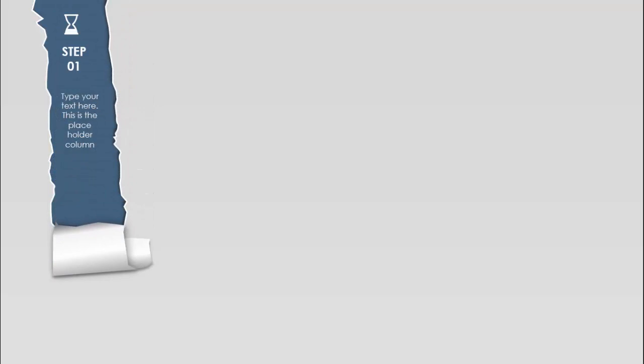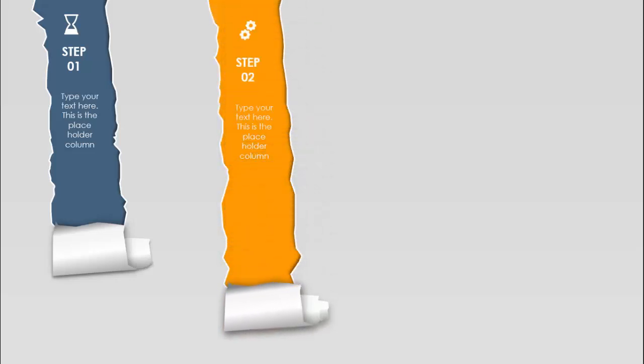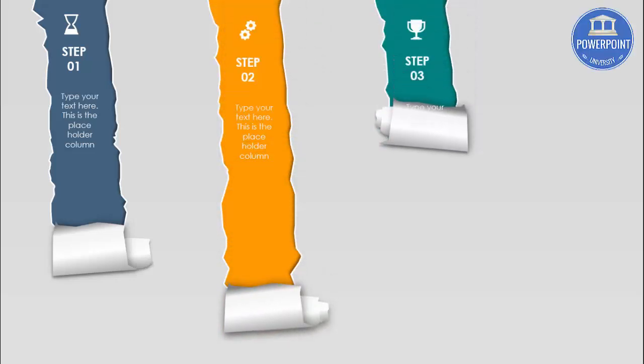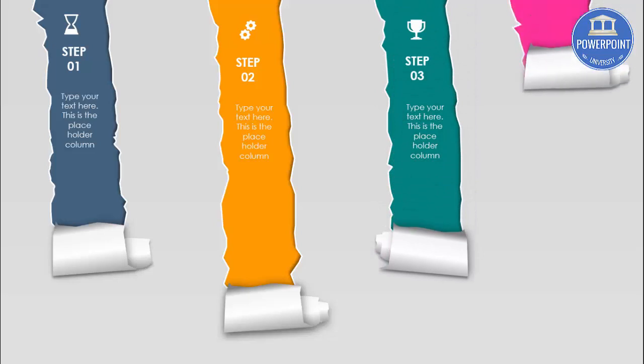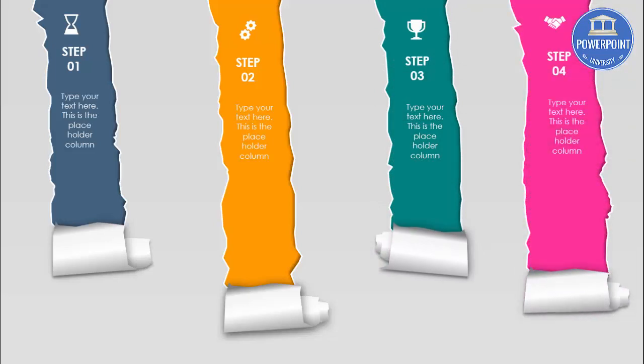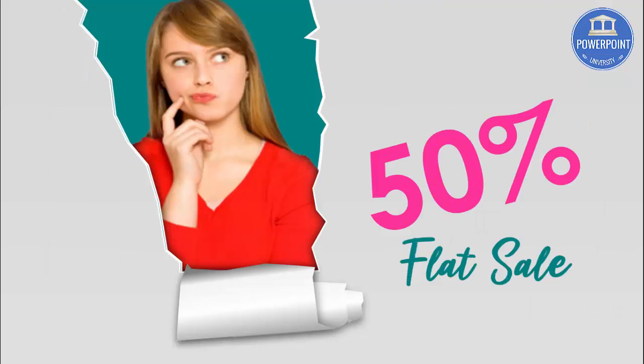In this tutorial I'm going to show you a torn paper infographic slide in PowerPoint. When I click the paper, it tears from the top and reveals step one with the icon and detailed text. Each click reveals the next torn paper — step two, three, and four. I've also made a slide showing a 50% sale to attract customers.